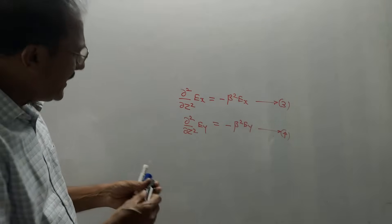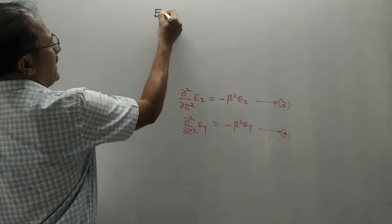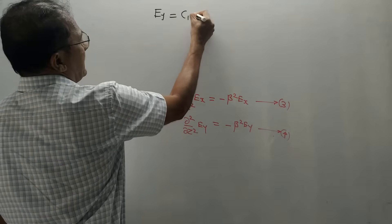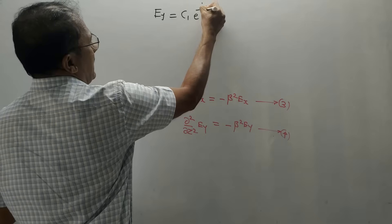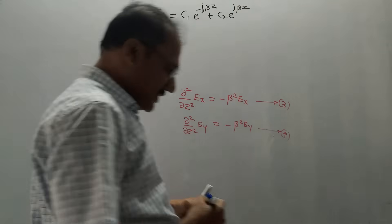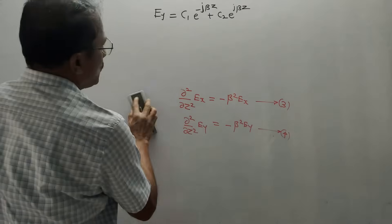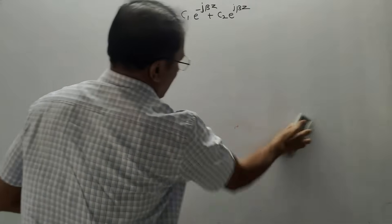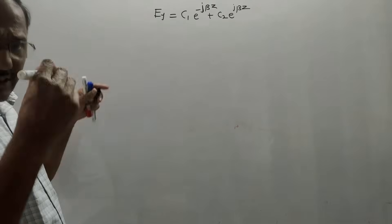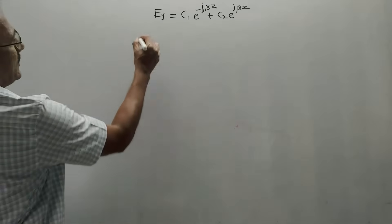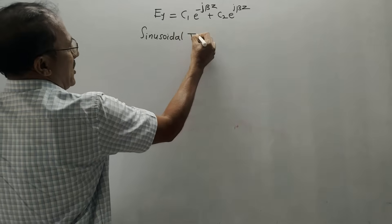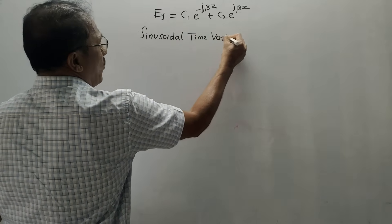This was derived in terms of E; the same can be done in terms of H. For now, equations 3 and 4 in terms of Ex and Ey are sufficient. Consider any component — let's say Ey. These are differential equations, and the standard solution is: Ey = C1·e^(−jβz) + C2·e^(+jβz), where C1 and C2 are constants. There is one more important concept needed: sinusoidal time variation.